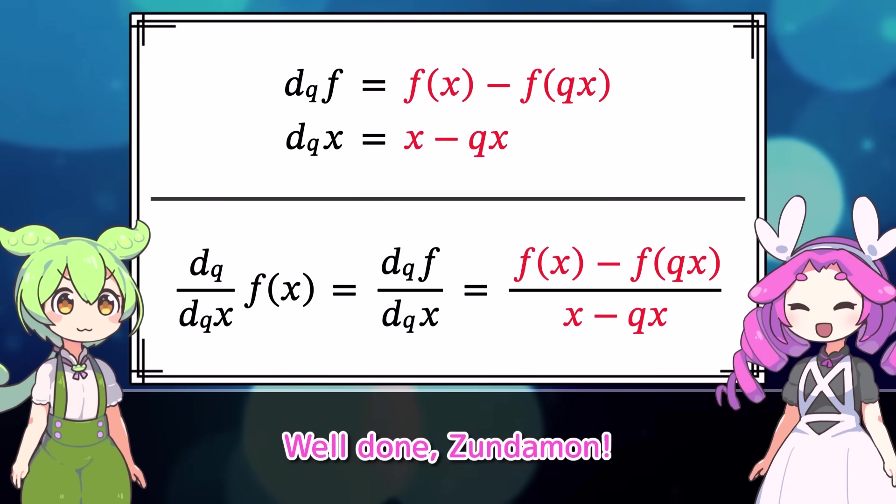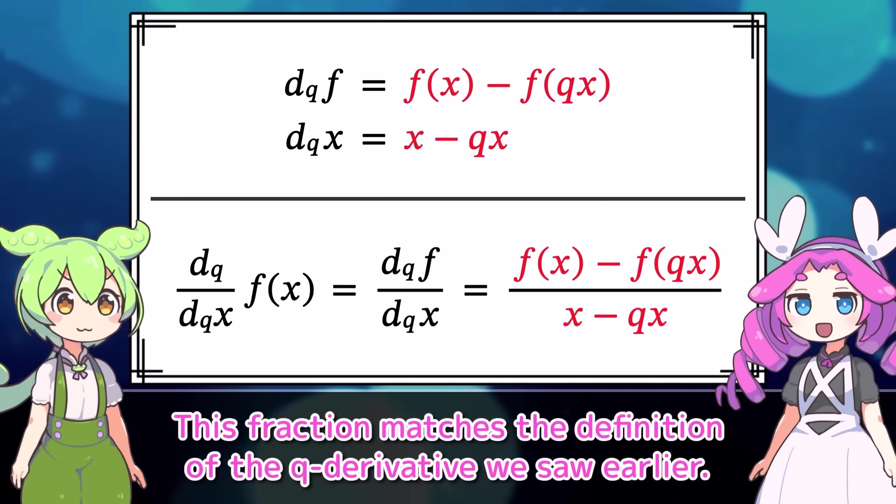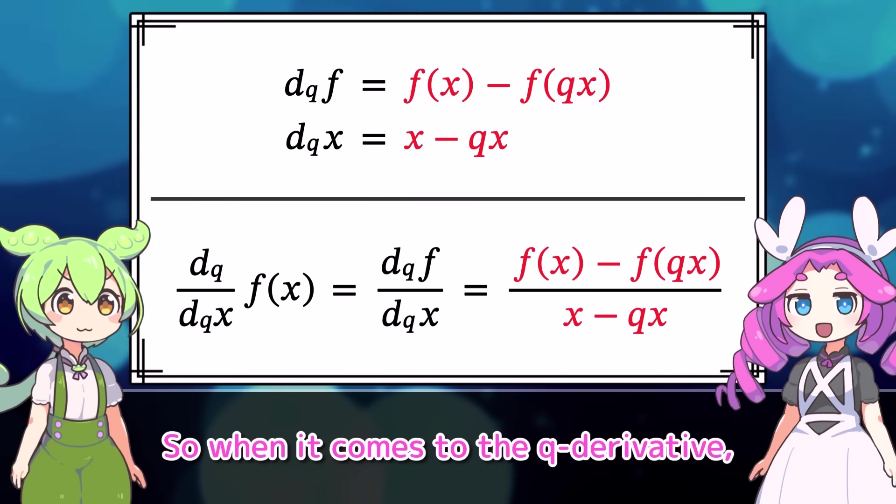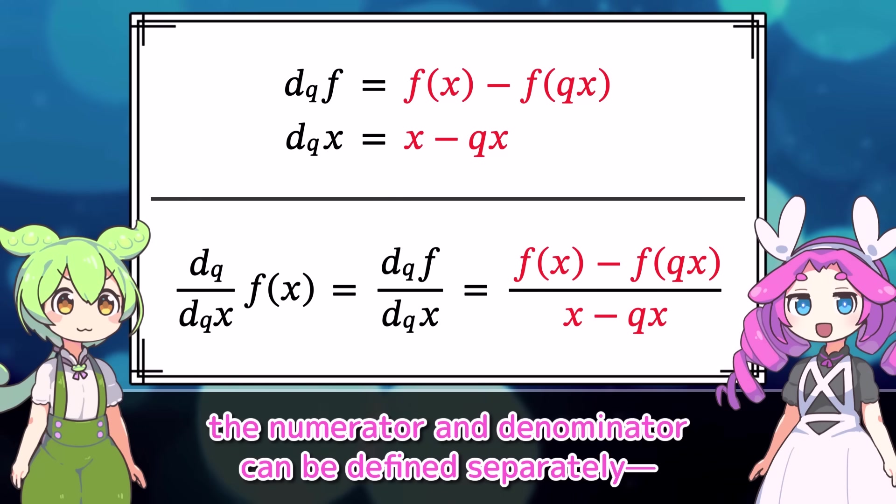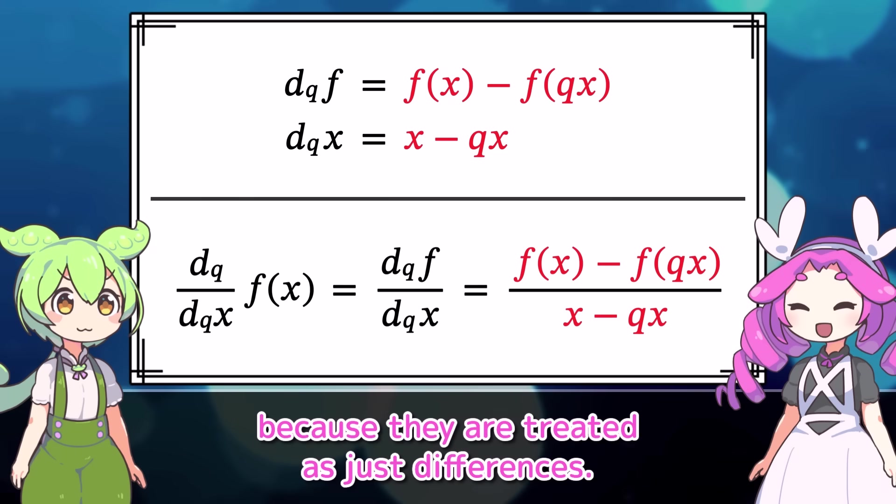Wait. This looks like… it's the change in f divided by the change in x. Since we define them separately, it naturally turns into this fraction. Well done, Zunderman. This fraction matches the definition of the q-derivative we saw earlier.